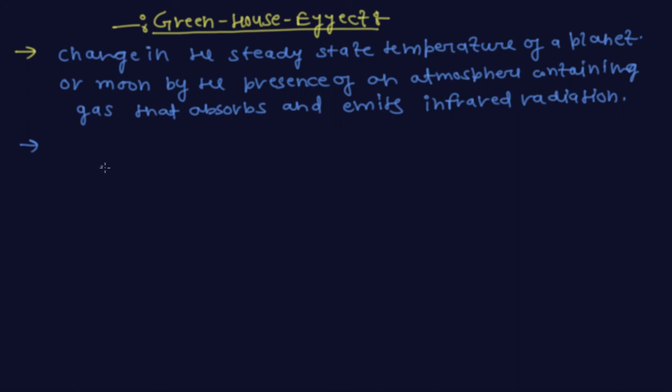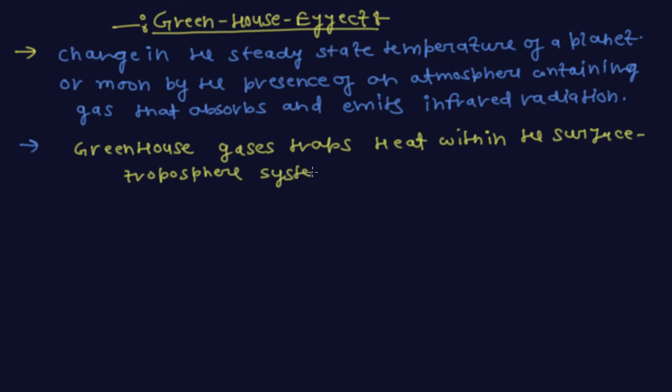Thus, greenhouse gases trap heat within the surface-troposphere system. So, the greenhouse effect is one of several factors that affect the temperature of the Earth.